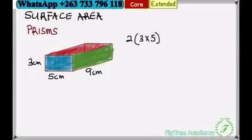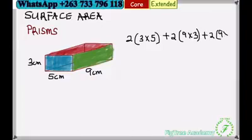So in this case since this face is 3 times 5, we also have a similar shape which is opposite which is also 3 times 5. So here we just multiply by 2 which means we have 2 similar sides which measures 3cm by 5cm. Then we add another one. Here is 9 times 3, this side in green. We also have an opposite side with the same dimensions. We also have 9 times 5 which is the top and the base. So we just multiply by 2 to show that we have 2 sides with the same dimensions.